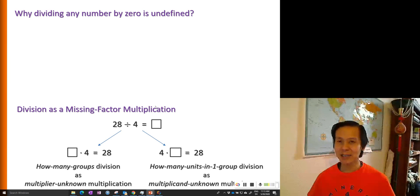So let's use this idea to explain why any number N divided by zero is undefined. We can use the how many groups type of division to explain it.